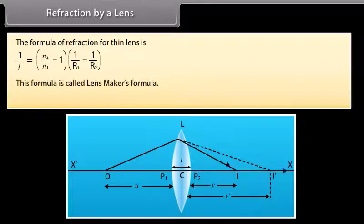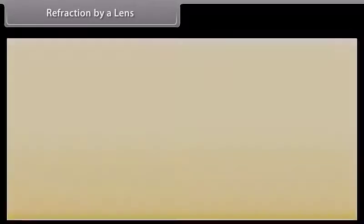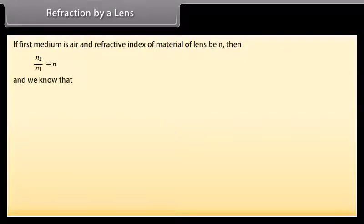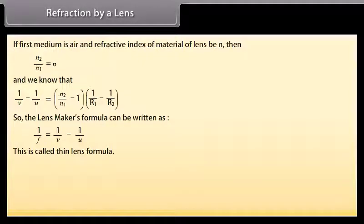This formula is called the Lensmaker's Formula. It also holds for a concave lens. If the first medium is air and the refractive index of the material of the lens is N, then N2/N1 = N. The lensmaker's formula can then be written as the thin lens formula.